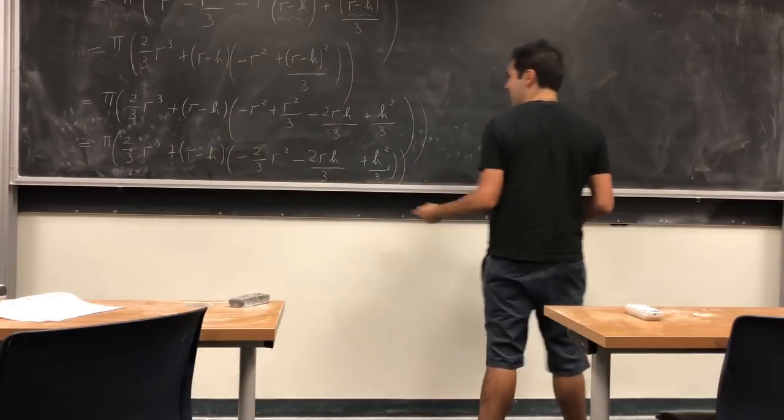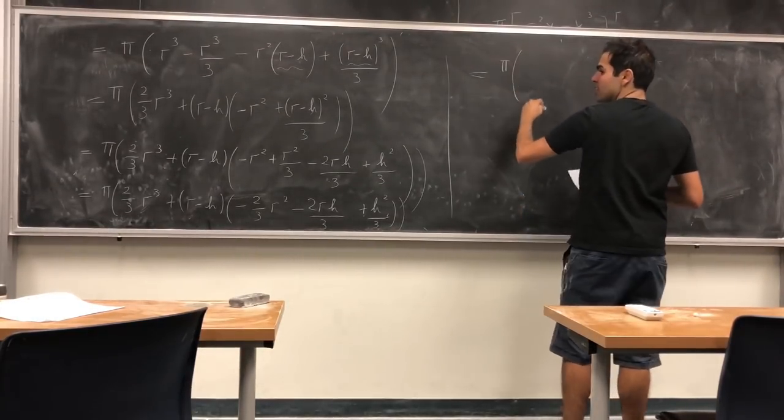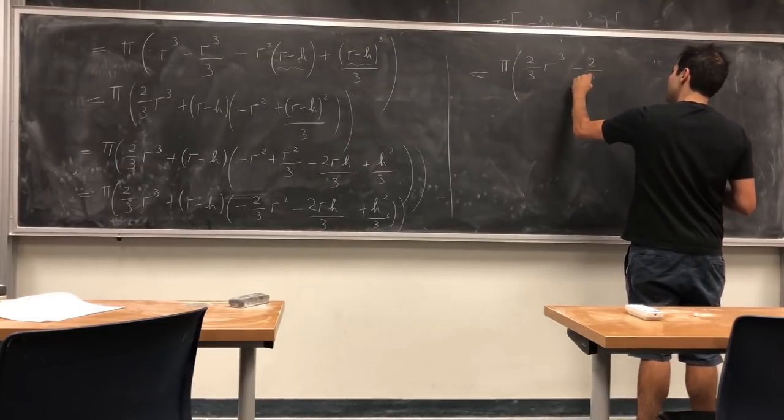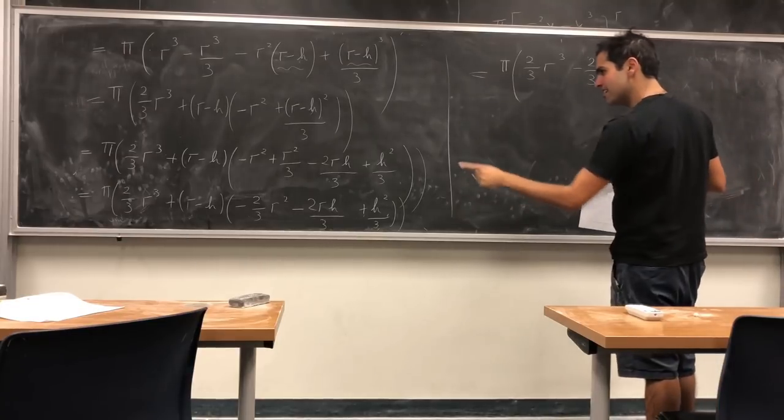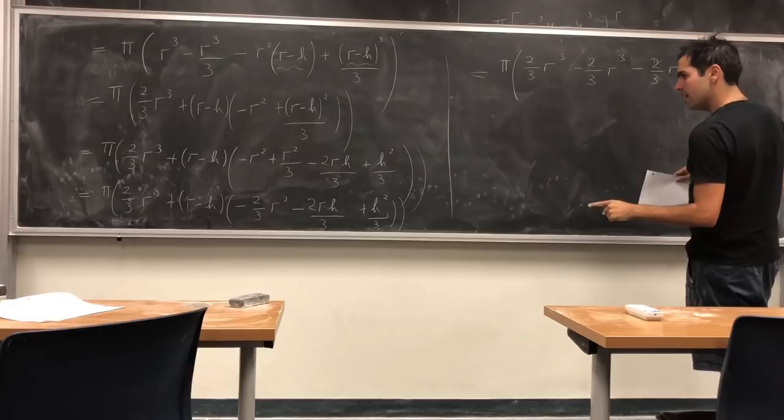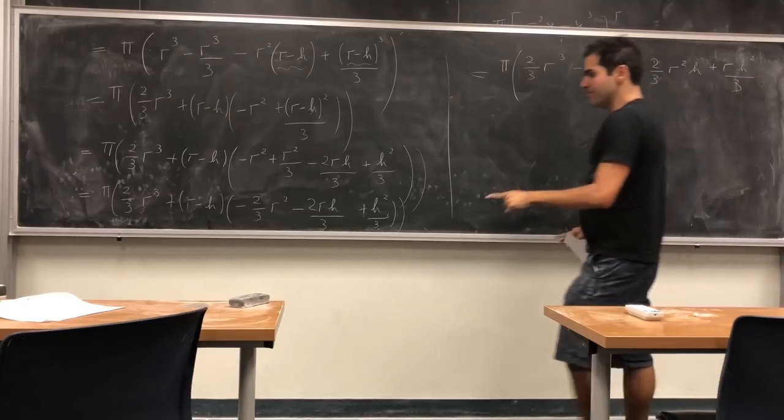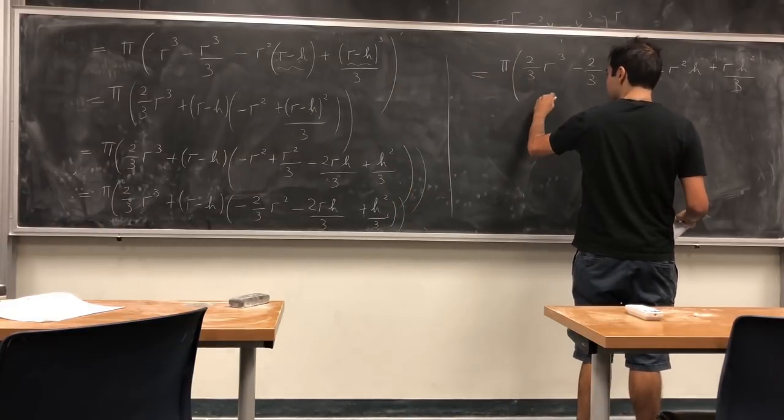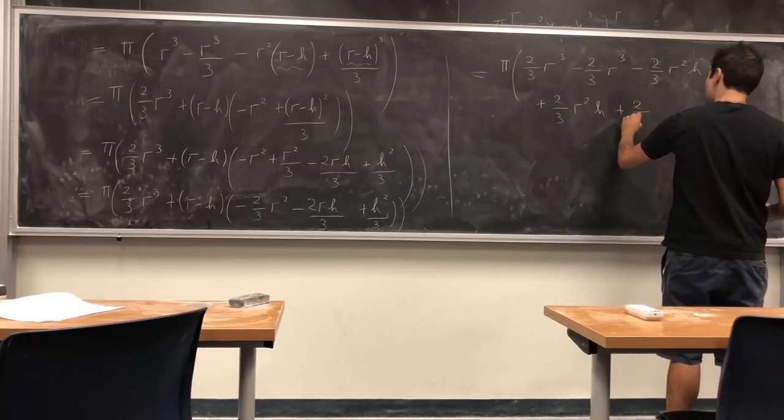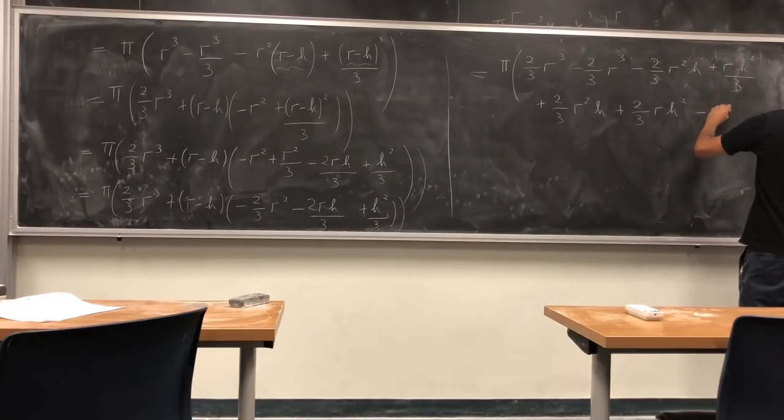So let's just expand everything out. I know it's kind of crazy. This is calculus. It's π(2/3 r³) and then let's foil this out. So -2/3 r³ - 2/3 r²h + rh²/3. And then remember, be careful, there's this minus thing. So we have +2/3 r²h + 2/3 rh² - h³/3.